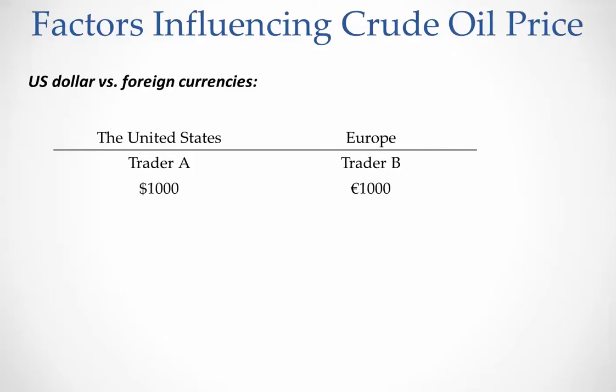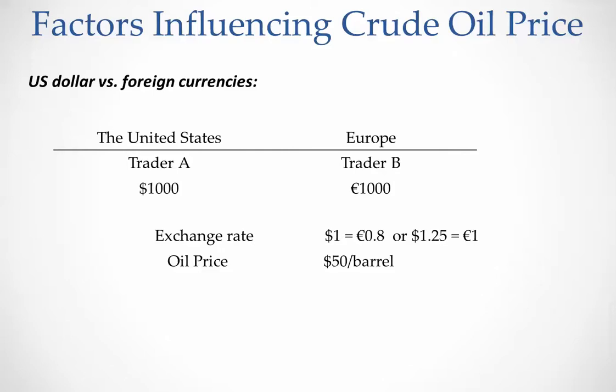Now let's assume the case where the US dollar loses its value. Same two traders: trader A is in the United States with $1,000, and trader B is in Europe with 1,000 euros. Now the US dollar has lost its value — one dollar is equivalent to 0.8 euros, or with one euro you can get $1.25. Let's assume the crude oil price is still $50 per barrel.